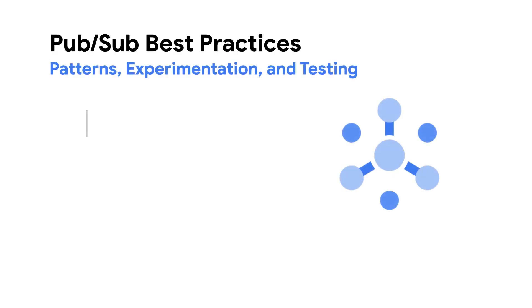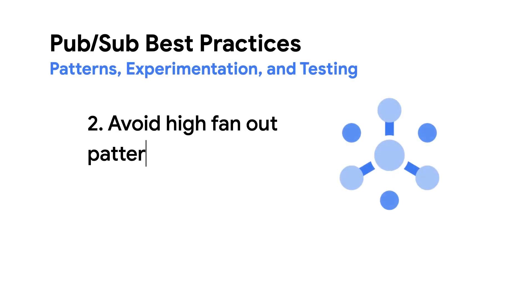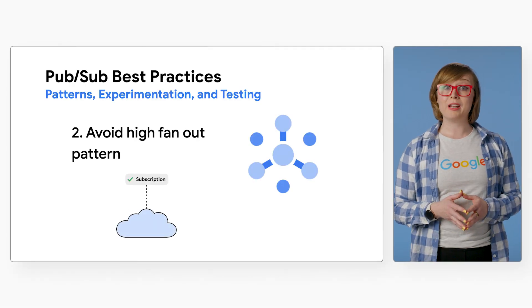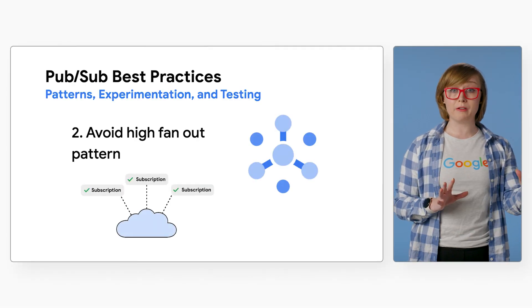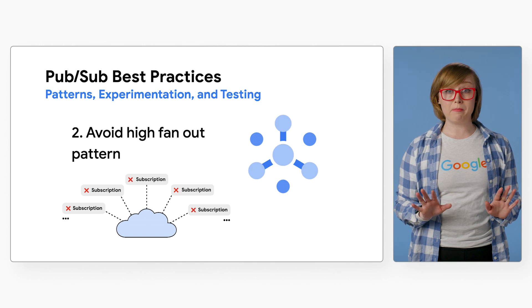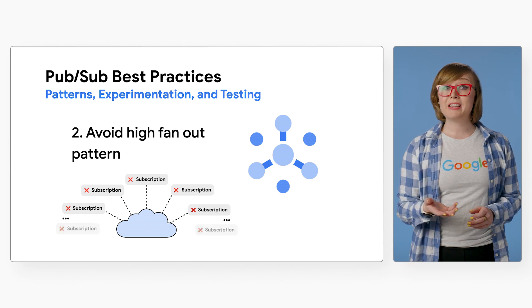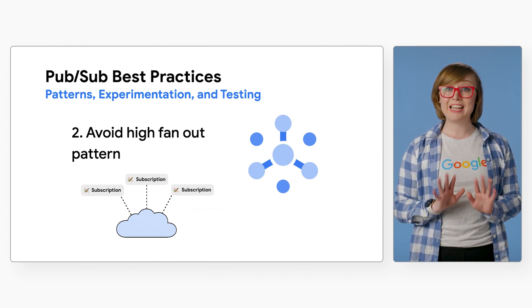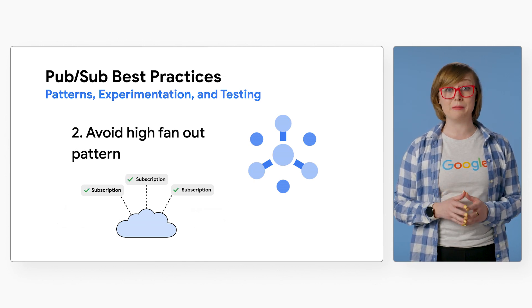Number two: avoid high fanout pattern. High fanout pattern, where you would have a large number of subscriptions, is not recommended as Cloud PubSub has a hard limit of 10,000 subscriptions.